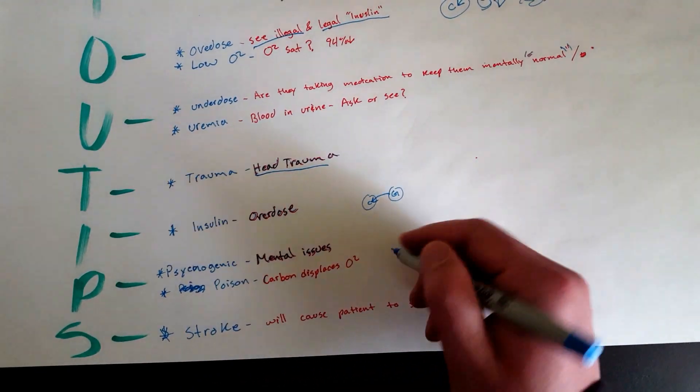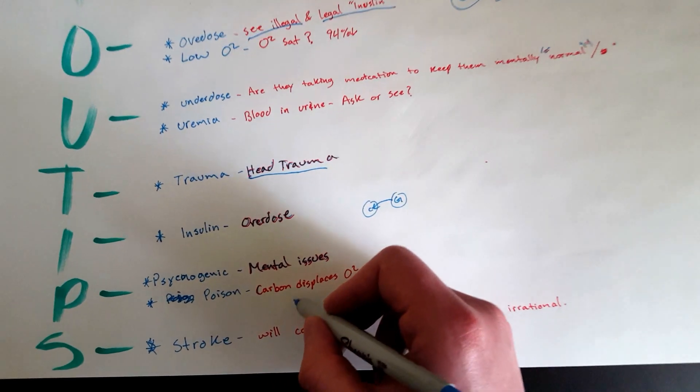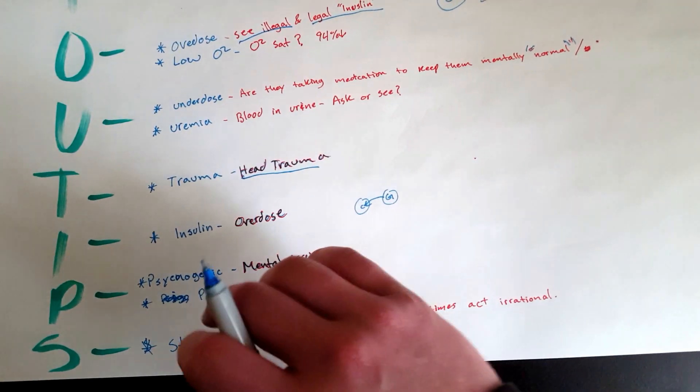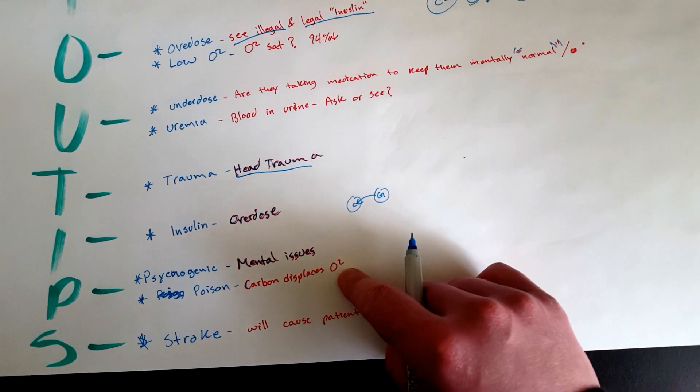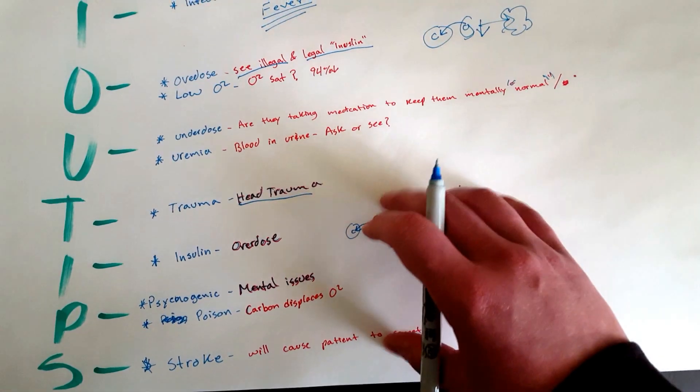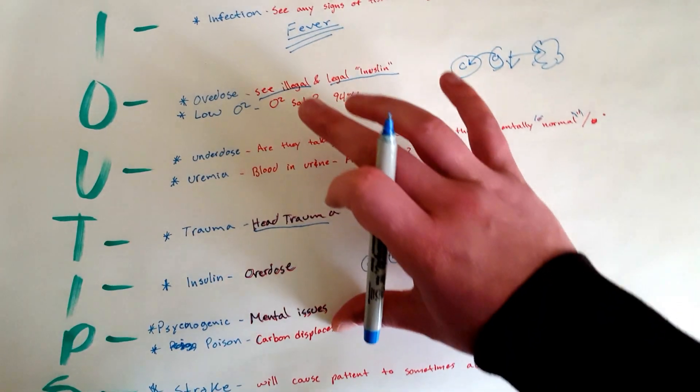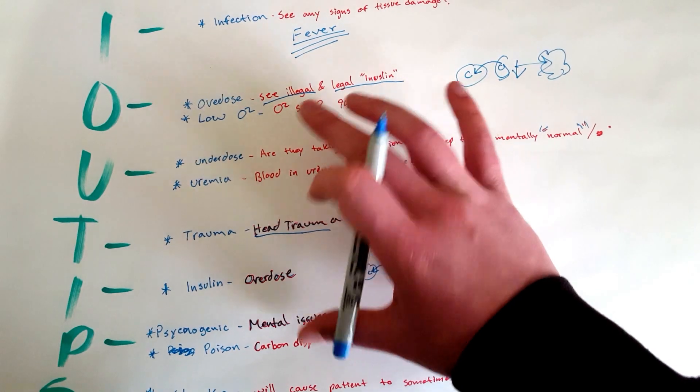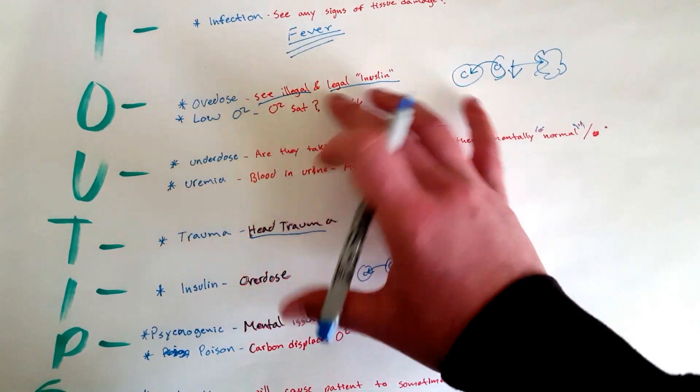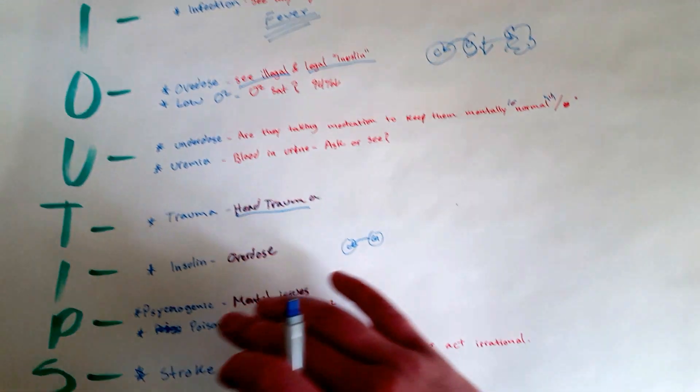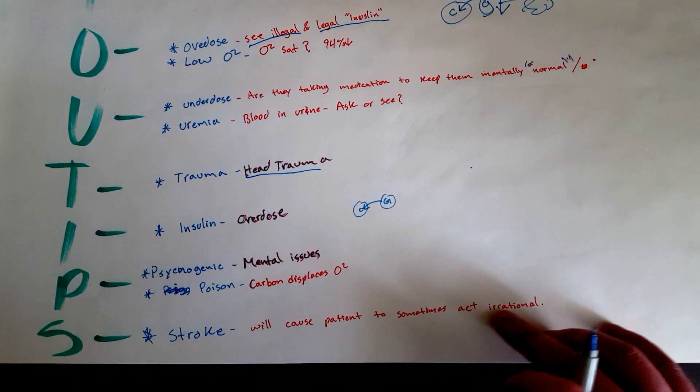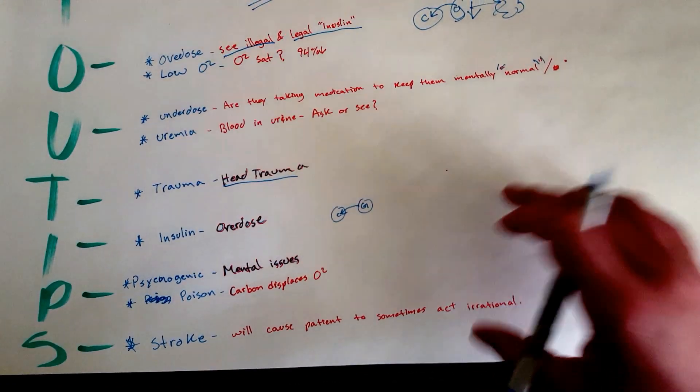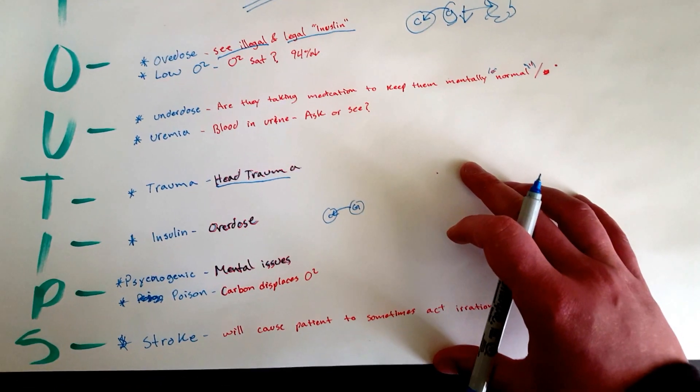P: Poison. A good one for this would be carbon monoxide. So carbon monoxide—it displaces O2 in the bloodstream and now you're deprived of O2. So it does also go hand in hand with this one. I just gave different scenarios for each one. All right, S: Stroke. A stroke may cause a patient to act irrational.